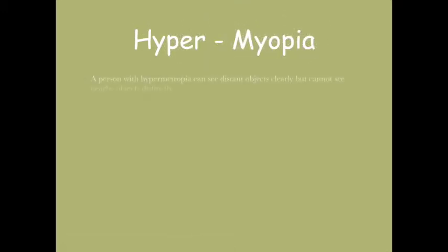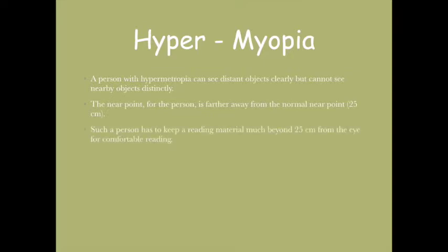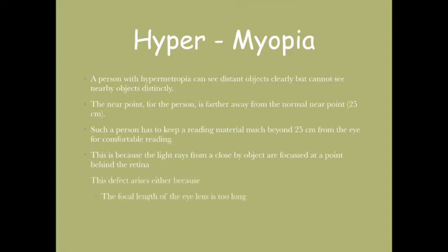Hypermetropia is the opposite case of myopia. Here the person cannot see nearer objects. The near point becomes farther than 25 centimeters. Such a person has to keep reading material much beyond. This is because light rays form a focus point behind the retina, as the focal length is too low or the eyeball becomes very small.